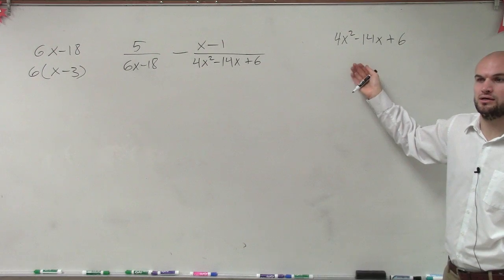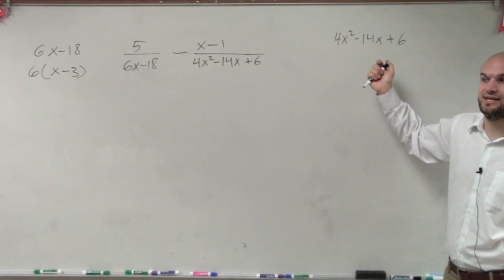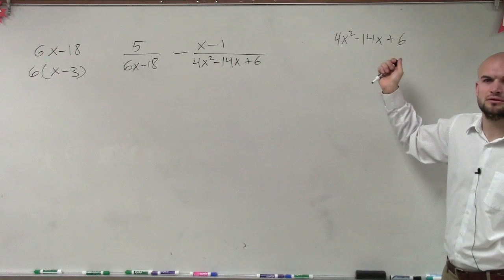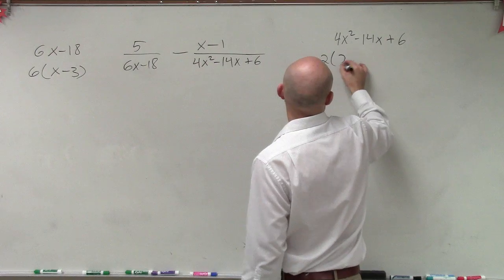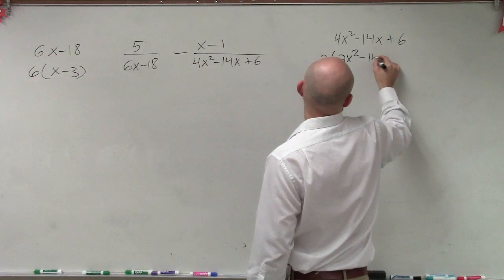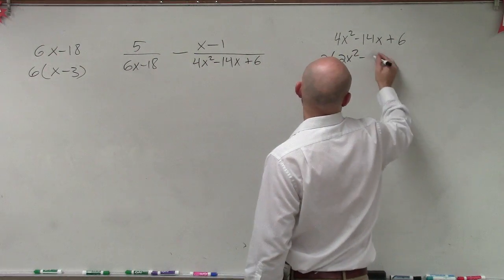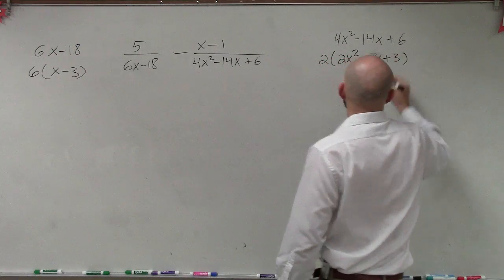Factor out the GCF, greatest common factor. So if I factor out a 2, I'm going to put 2 times 2x squared minus 7x plus 3.